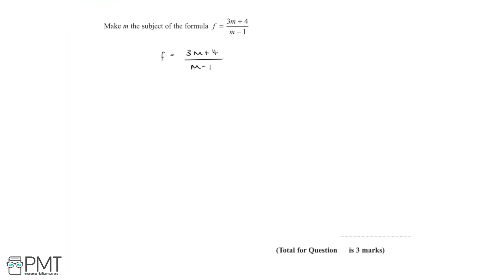Let's start by multiplying both sides by m minus 1, which leaves us with f multiplied by m minus 1 equals 3m plus 4.